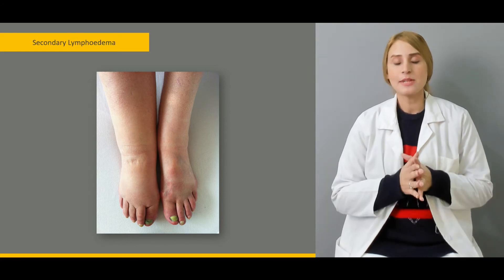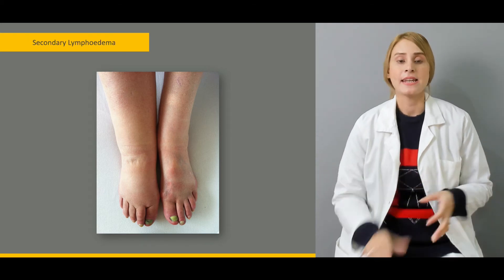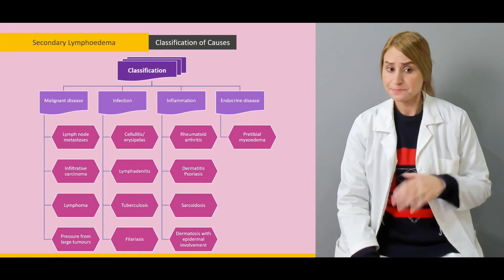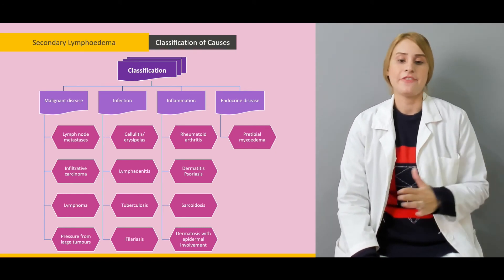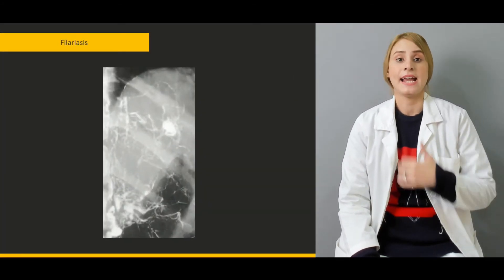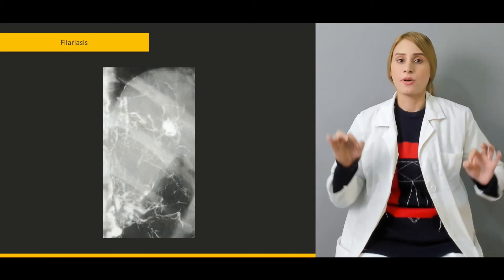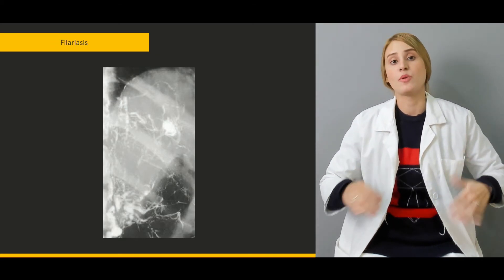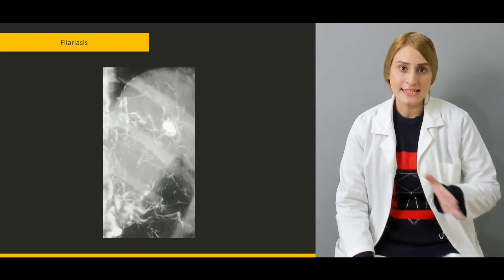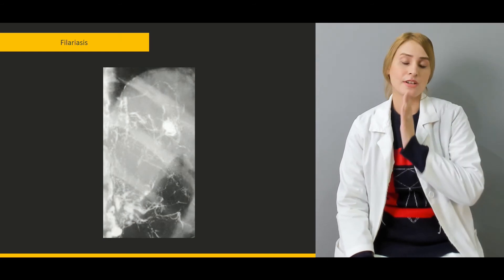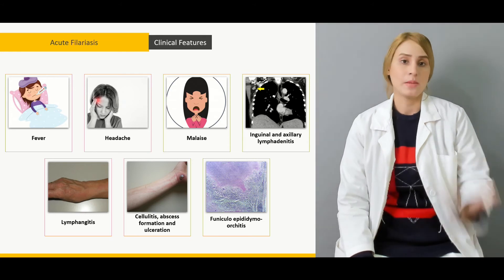Then more precisely, we'll be talking about the secondary lymphedema, which is very important to know, and its classification on the basis of causes — like malignant, infection, inflammation, and endocrine causes. We'll be talking in detail about filariasis, which is very common worldwide, affecting around 100 million of the population. We'll discuss the organism responsible and how it travels to the lymphatic channels.